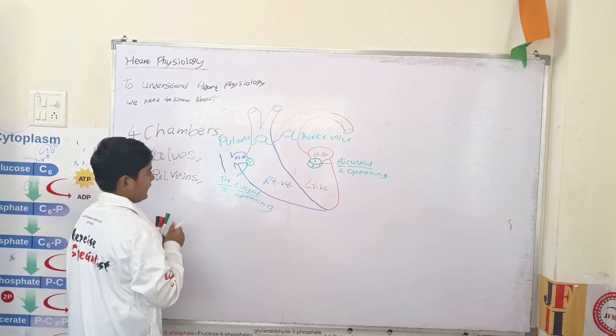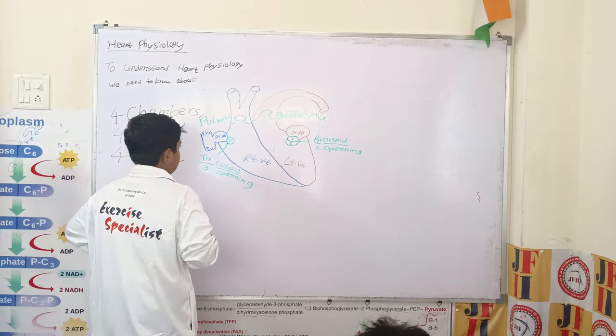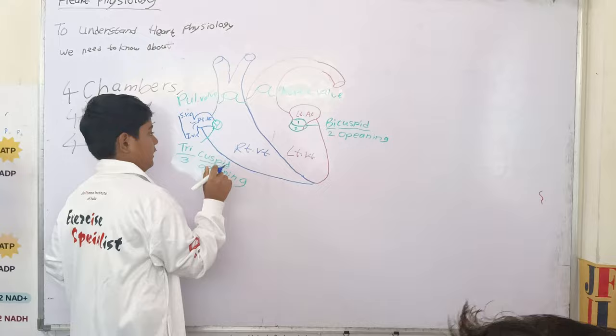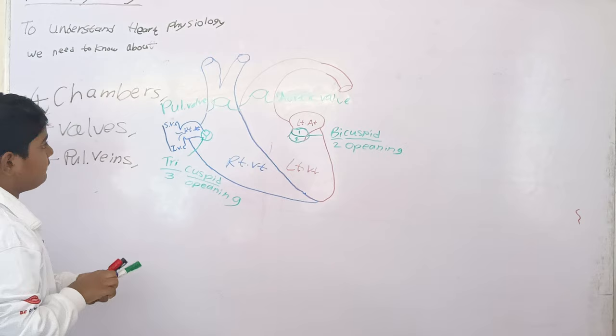First, the right atrium gets blood from the superior vena cava and inferior vena cava. After the blood goes into the right atrium, it will go through the tricuspid valve into the right ventricle. The right ventricle will force the blood through the pulmonary valve into the pulmonary artery, and this pulmonary artery will go into the lungs.